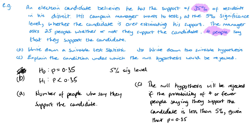If we were completing this question fully, we'd use p = 0.35, n = 25, and x = 4, and go to the binomial tables to look at the value for x ≤ 4. If that value is less than 5%, we reject H0. If it's greater than 5%, we accept H0. That's the basics behind this.